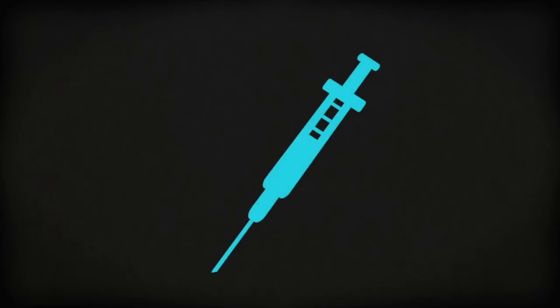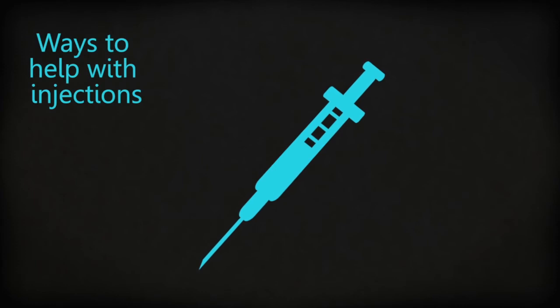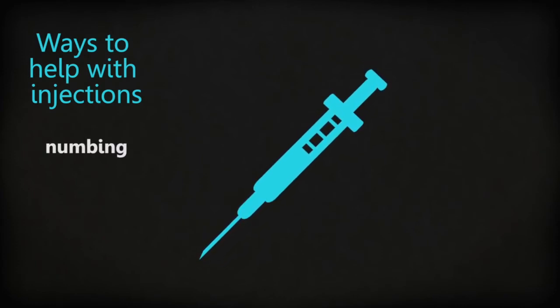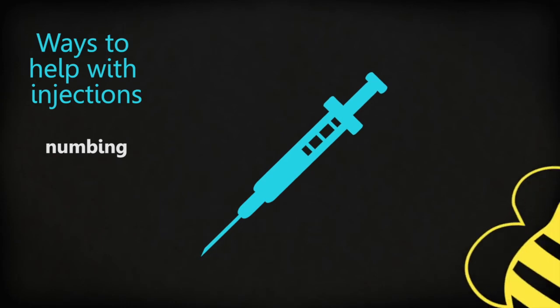The injections are given by your nurse in a muscle near your bottom or hip. They can be painful, but your nurse can help to numb the pain by adding the numbing agent lignocaine to the penicillin and using ice or the buzzy.